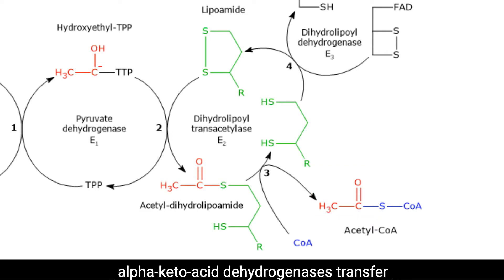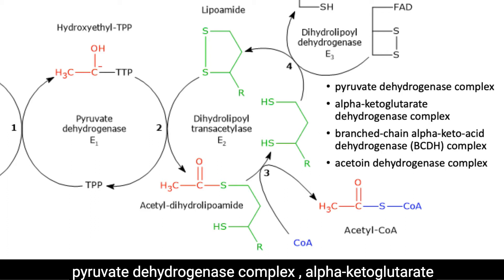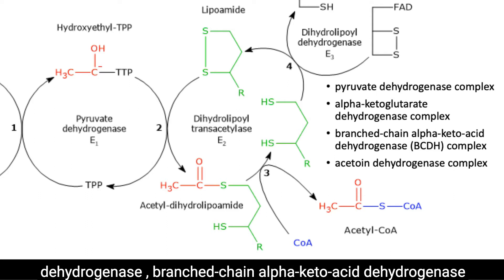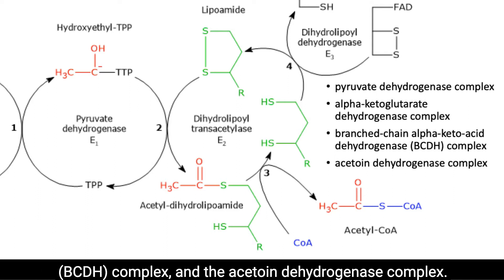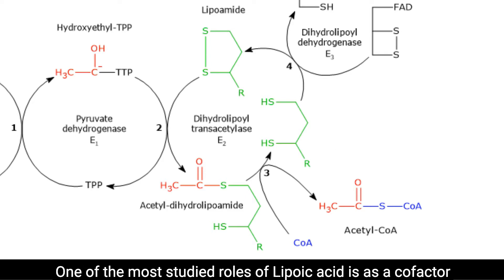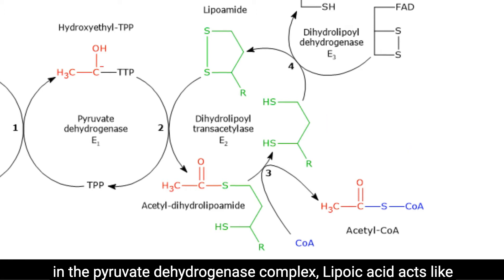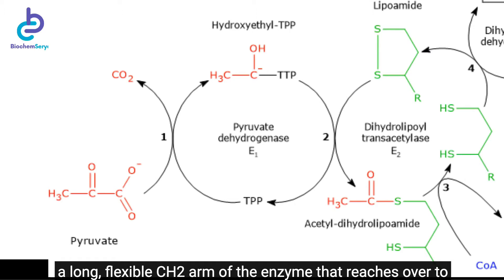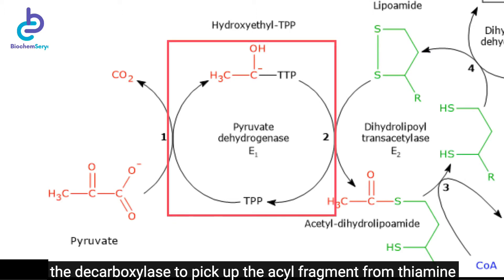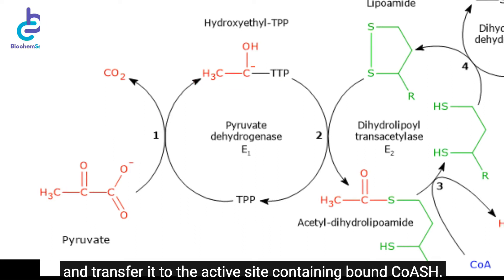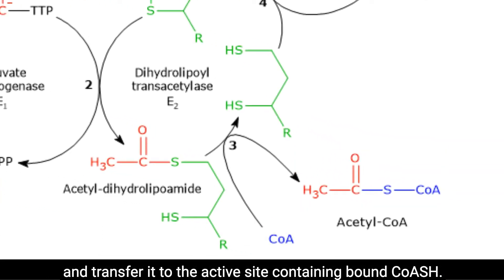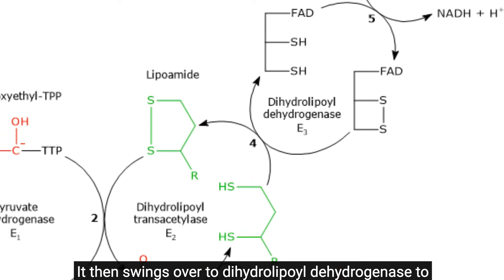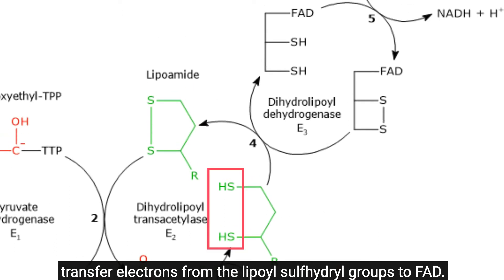Alpha-ketoacid dehydrogenase transfer reactions occur by a similar mechanism in the pyruvate dehydrogenase complex, alpha-ketoglutarate dehydrogenase, branched-chain alpha-ketoacid dehydrogenase complex, and the acetoin dehydrogenase complex. One of the most studied roles of lipoic acid is as a cofactor of the pyruvate dehydrogenase complex. In that complex, lipoic acid acts like a long, flexible CH2 arm of the enzyme that reaches over to the decarboxylase to pick up the acyl fragment from thiamine and transfer it to the active site containing bound CoA. It then swings over to dihydrolipoyl dehydrogenase to transfer electrons from the lipoyl sulfhydryl groups to FAD.